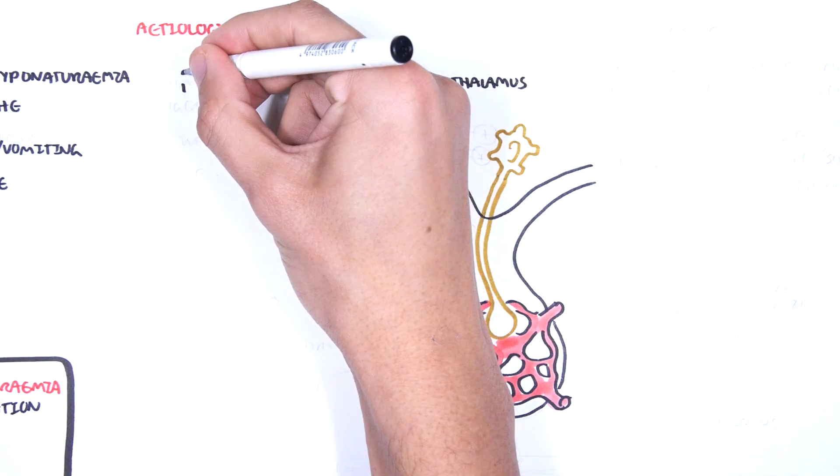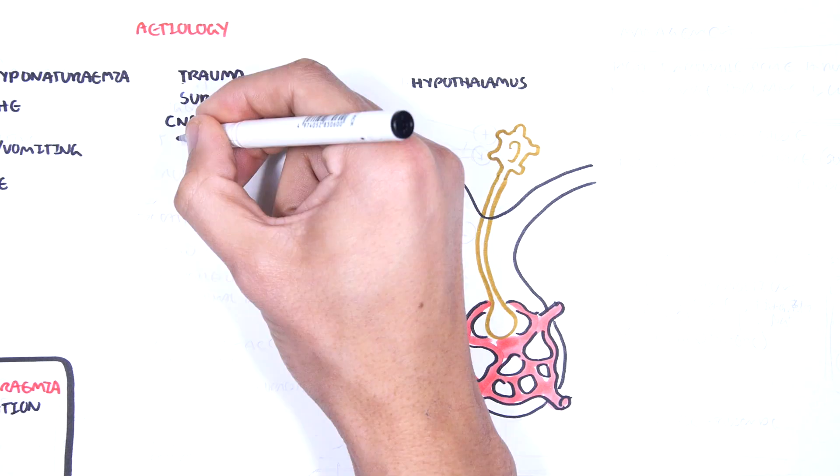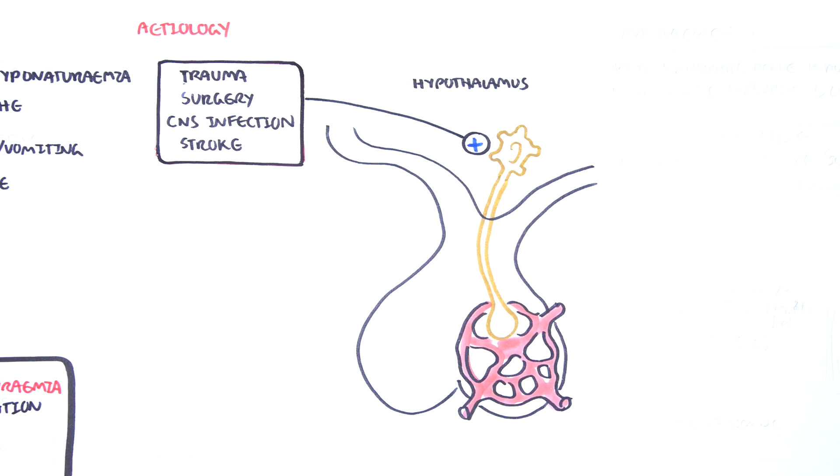Causes of SIADH include trauma, surgery, CNS infections, and stroke, which affect the hypothalamic pituitary axis, increasing the production of ADH.